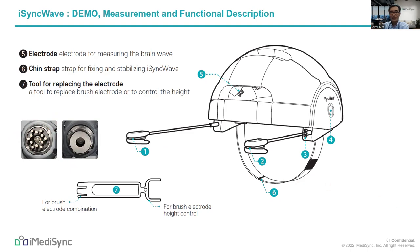Number five is the electrode — brush and flat electrode. In the center of each electrode, there is an LED for photobiomodulation. iSYNC WAVE follows the international standard 10-20 standardized electrode locations. There are 19-channel EEG with a reference channel in the left earlobe and a ground channel in the center of the forehead. Flat electrodes are placed on the forehead, while brush electrodes are placed in all other areas to penetrate hair and make electrical contact with the scalp. The Ag-AgCl coating on conductive polymer forms the contact surface of each electrode. Number six is the chin strap, and number seven is a tool for height control, especially for children, and for replacing brush electrodes.